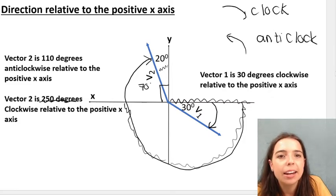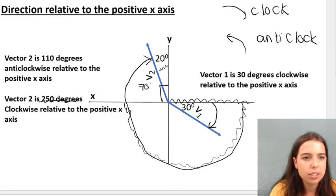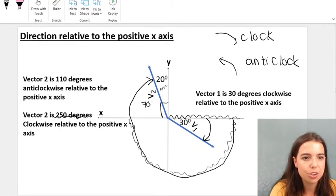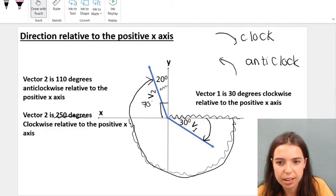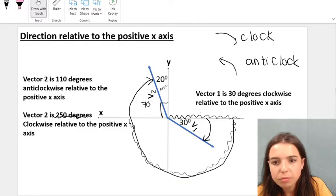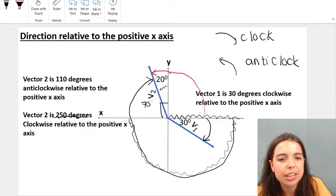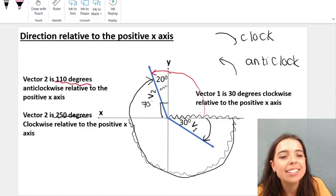I can again go backwards. I can go anticlockwise. There's no rule that says you have to go clockwise. If I go anticlockwise relative to the positive x-axis, I start over here. This is the positive x-axis. Anticlockwise would be this way. Stopping here would be 90 degrees. Then I go extra 20 degrees. 90 plus 20 is 110 degrees anticlockwise.